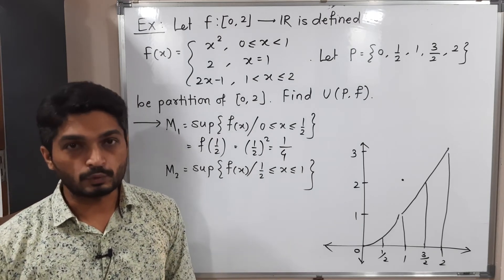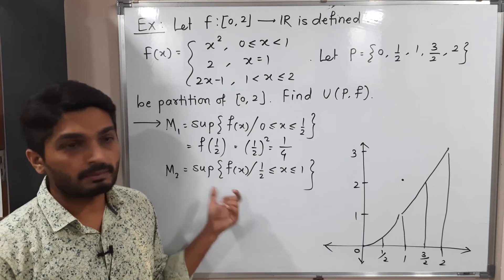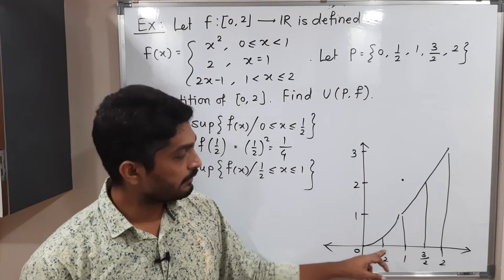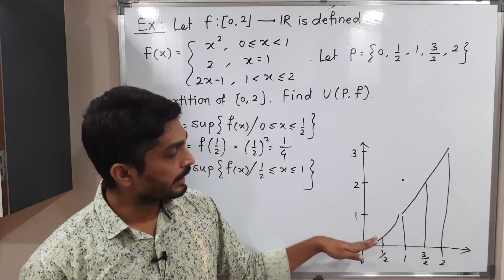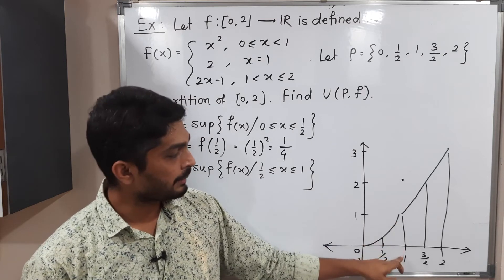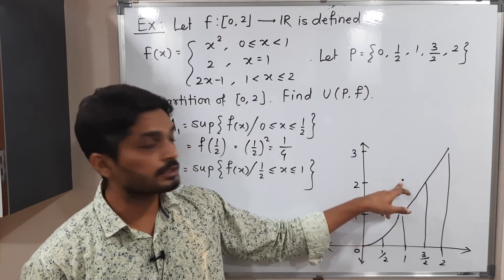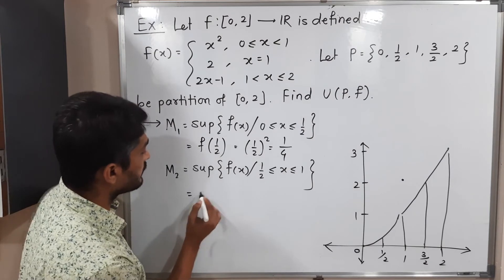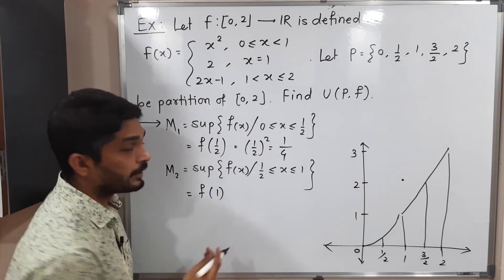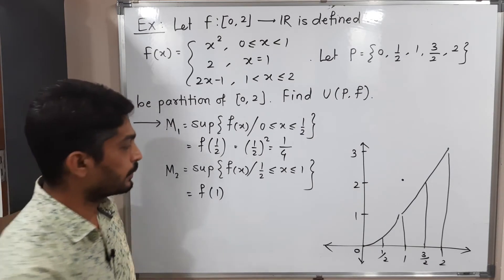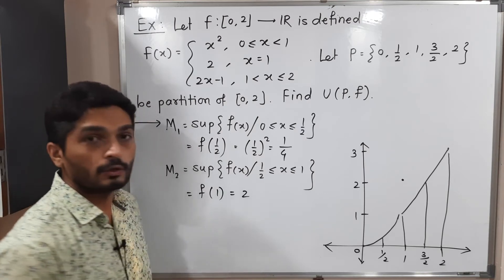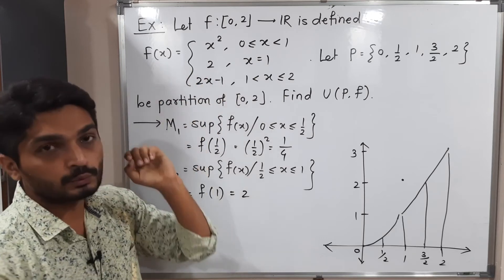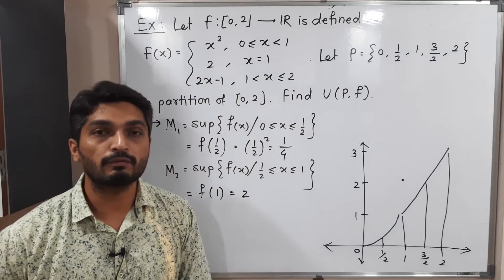M₂ is the supremum of f(x) on the interval [1/2, 1]. The function is increasing, but at x=1 the function takes the special value f(1) = 2. So the maximum value is 2, and M₂ = 2.